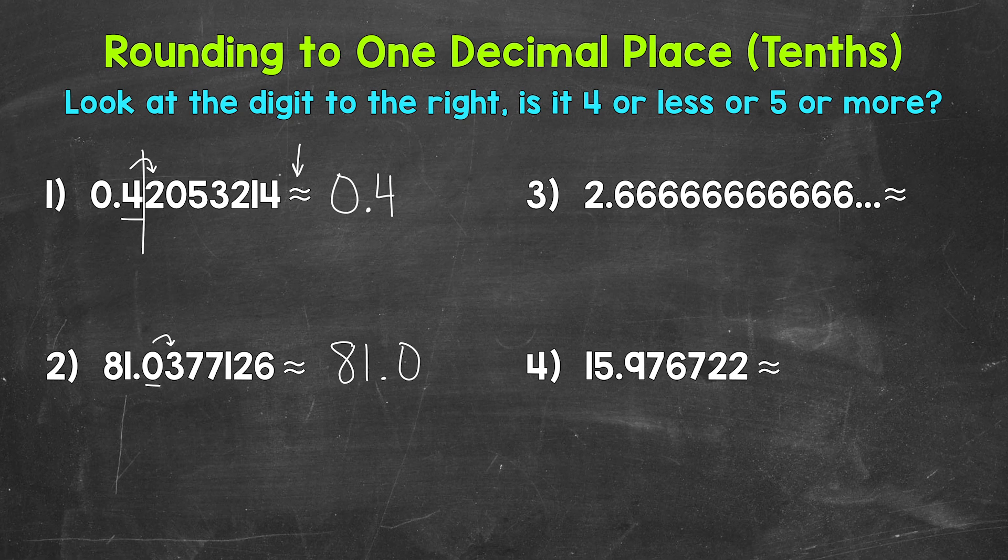Let's move on to number three, where we have two and six repeating. So we have a repeating decimal here. Those sixes go on forever, but we still round the same way. We have a six in the tenths place, with a six to the right in the hundredths. Six is five or more, so we round up. This rounds to two and seven tenths.